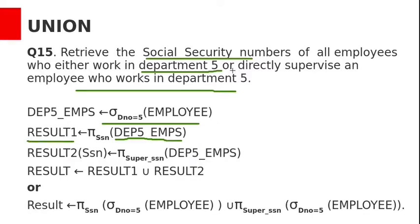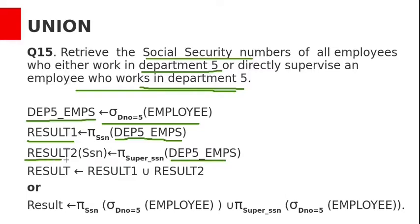Second, find the SSN of direct supervisors of those department 5 employees. From the department 5 employees relation, project super_SSN to get the supervisors' SSN values. This is the second query result. The total result is result 1 union result 2.